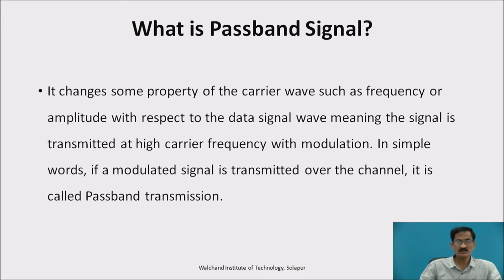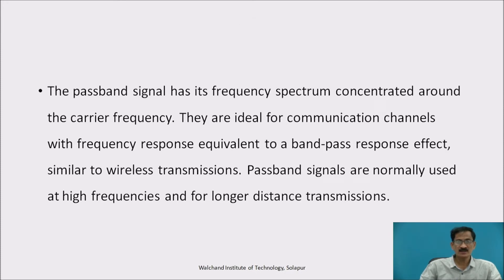A passband signal changes some properties of the carrier wave, such as frequency or amplitude, with respect to the data signal wave, meaning the signal is transmitted at a high carrier frequency with modulation. If a modulated signal is transmitted over the channel, it is called passband transmission. The passband signal has its frequency spectrum concentrated around the carrier frequency. They are ideal for communication channels with a band-pass response, similar to wireless transmissions, and are normally used at high frequency for longer distance transmission.